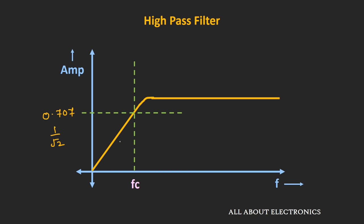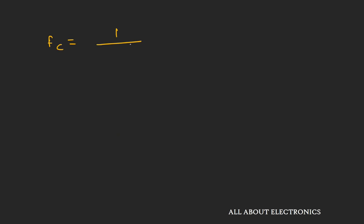Below the cutoff frequency fc, the output increases at the rate of 20 dB per decade. The cutoff frequency fc is given by the equation fc = 1/(2πRC), which is the same equation we obtained for the low pass filter.